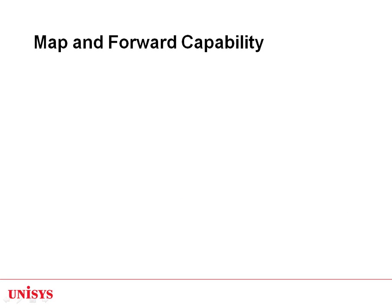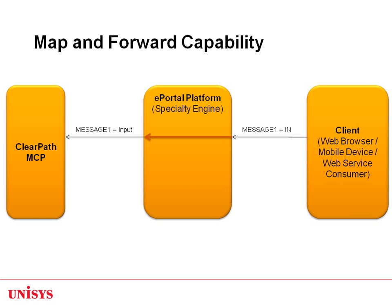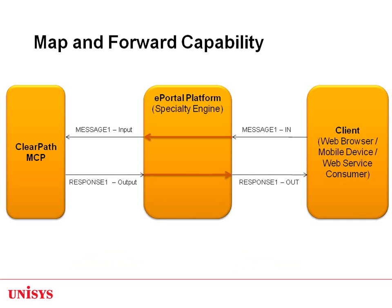In case no orchestration steps are defined for a client or server message, ePortal Developer provides support for default handling. When ePortal Runtime receives a client message with no orchestration steps defined, it can pick a server message with the same name, copy the field contents, and send the server message to the server application. Similarly, if orchestration does not explicitly define a reply action, ePortal Runtime can pick a client message with the same name as the last server message received, copy the field contents, and send it to the presentation application. This behavior is called Map and Forward capability, and is useful for cases where client messages and server messages match one-to-one.